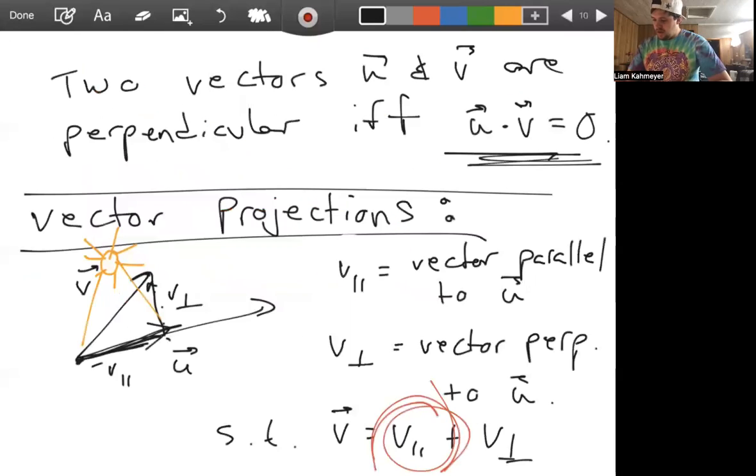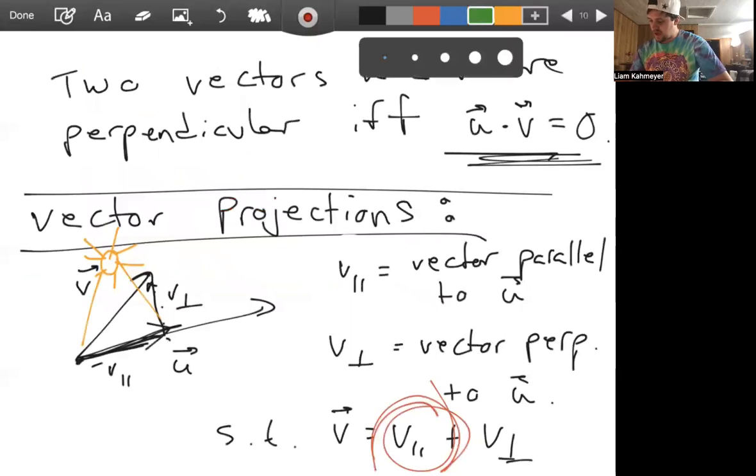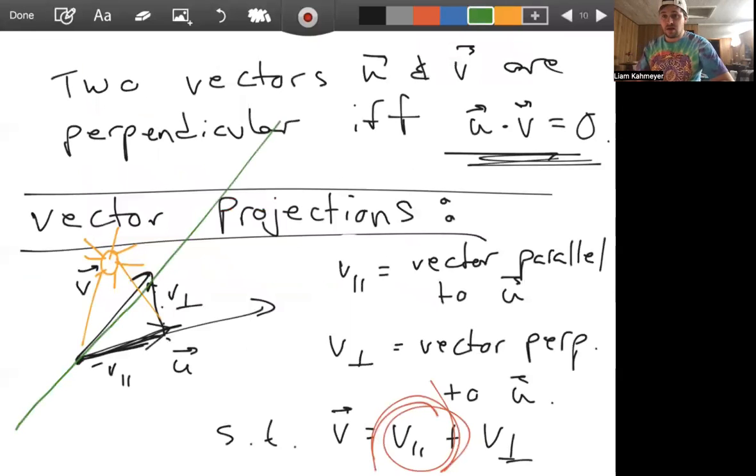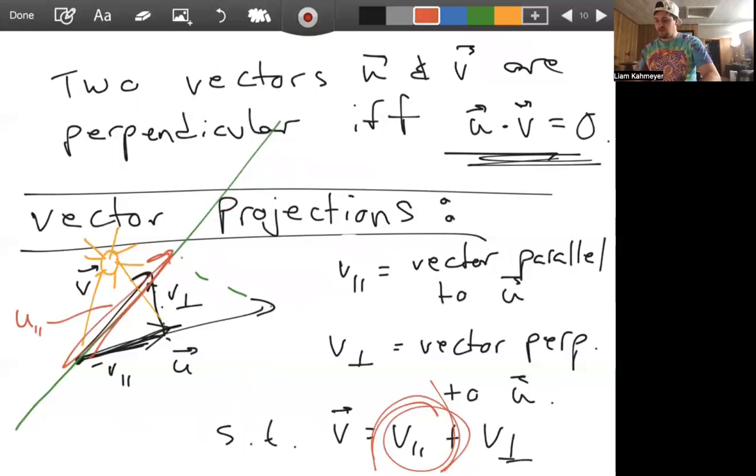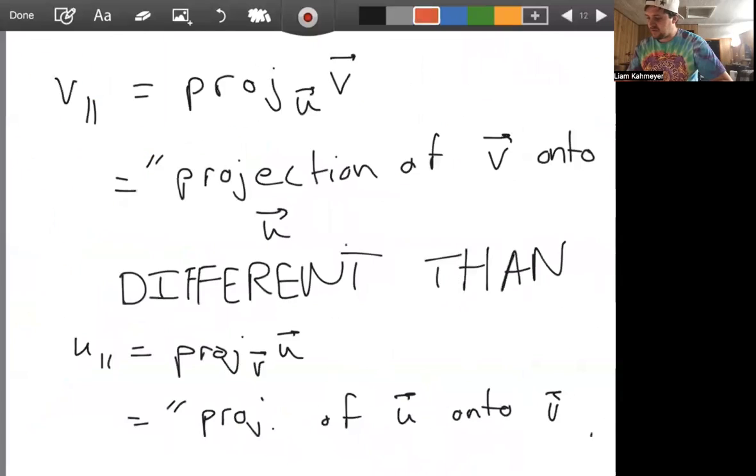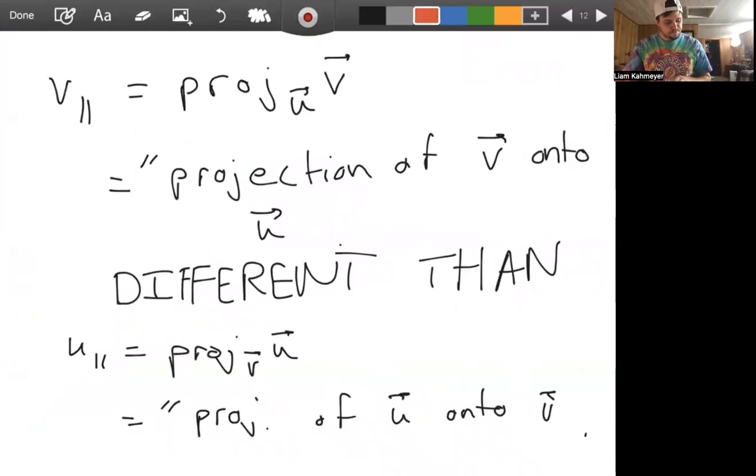Because in this setting, if you were to look at U projected onto V, well then you would kind of take a line extending, a line with direction vector V, and then you would have to look at the projection there. This would be your U parallel there, and so they're inherently different vectors. You can see this vector is very different from the first projection that we considered.